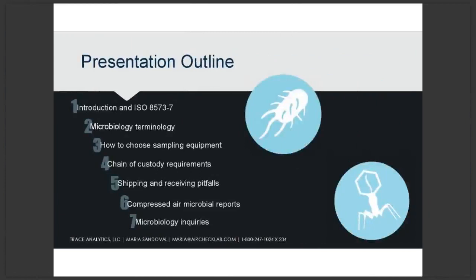This webinar is going to focus on seven topics. First, I'll introduce you to why it's important to sample your compressed air for microbial contaminants. We'll walk through ISO 8573-7 and its requirements. Third-party labs often assume microbial terminology is known to the sampling technicians using their equipment and consumables, so we'll go over microbiology terminology. We'll also cover how to sample using ISO 8573-7 appropriate equipment. Please feel free to email me or call us — my number and email are at the bottom of most slides.